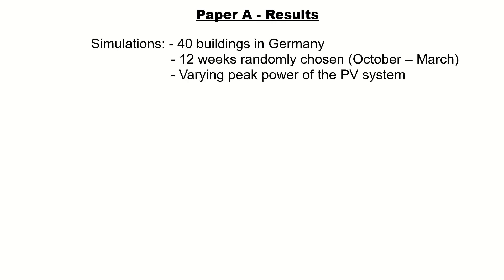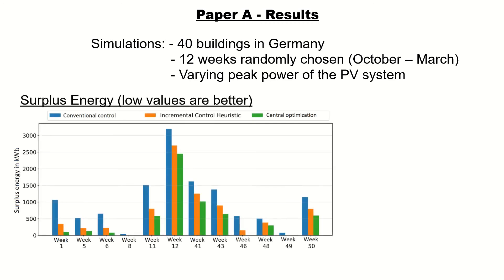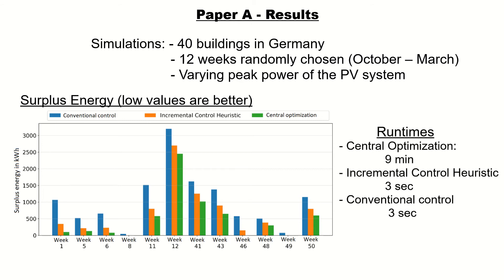For the results of paper A, I ran a simulation with 40 buildings in Germany, choosing 12 weeks randomly and varying the peak power of the solar system. The diagram shows surplus energy for three control strategies: blue bars for a conventional control strategy used most often nowadays, orange bars for the incremental control heuristic, and green bars for a centralized optimization serving as an upper benchmark. The developed algorithm could significantly reduce surplus energy in every week, leading to better utilization of renewable energy sources, while having much lower run times compared to centralized optimization.